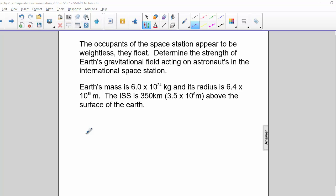Earth's mass is 6 times 10 to the 24th kilograms and its radius is 6.4 times 10 to the 6 meters. The ISS is 350 kilometers, which is 3.5 times 10 to the 5th meters above the surface of the Earth.